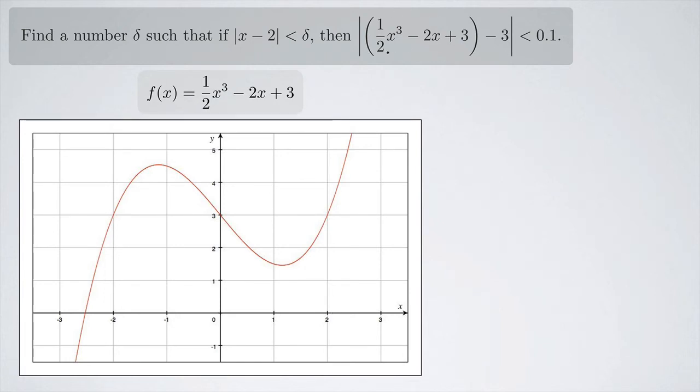And if that's true, then we want the distance between the value of the function and 3. Well, if we follow 2 up to the function and then go across, we do see a 3 over here. We want that distance to be less than 0.1.